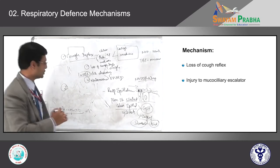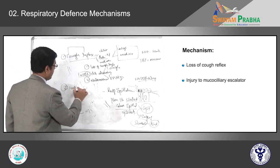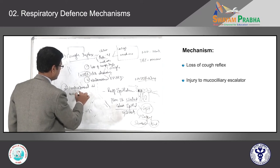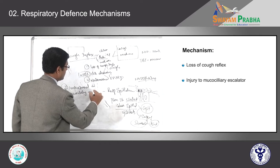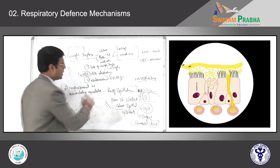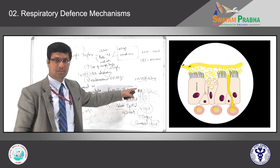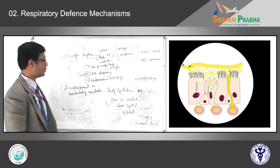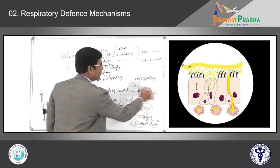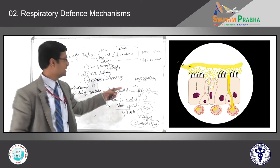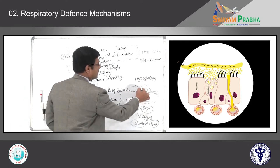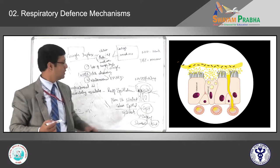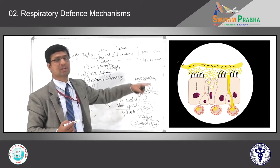The second impairment is in the mucociliary escalator. If your respiratory tract cilia are working properly, you will not have any infection. If there is impairment in ciliary motility, the dust particles entrapped in the mucus will not be pushed upward. They start accumulating, and when large amounts of dust particles accumulate along with mucus, it becomes a very good medium for secondary bacterial overload, making these patients more prone to respiratory infections.